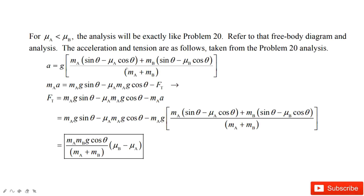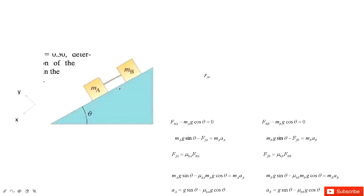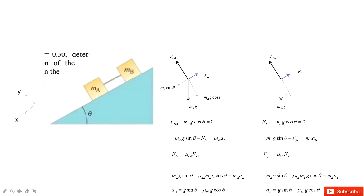In this second situation, since there is no tension, we write equations for each object separately. For object A: gravity, normal force, and friction only. We project gravity into x and y components. Similarly for object B: gravity, normal force, and friction — no tension term in either equation.